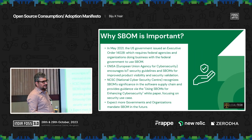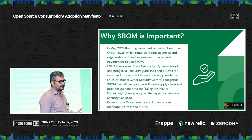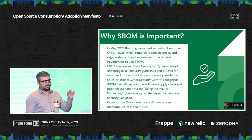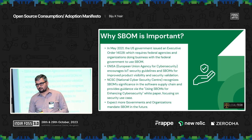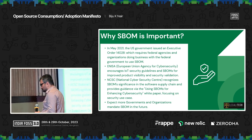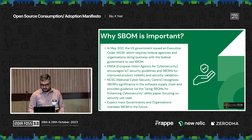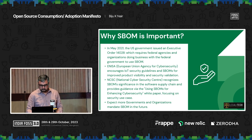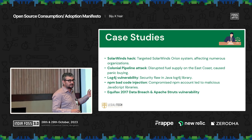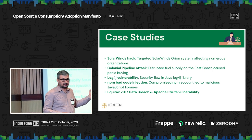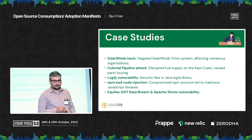As mentioned, the US government, through an executive order, has mandated that software bill of materials must exist — whether you are a private company or a public entity. In Europe and other parts of the world, governments are slowly also adopting it. These are some of the major things which have happened in the past that create the need for having an Open Source Adoption Manifesto.